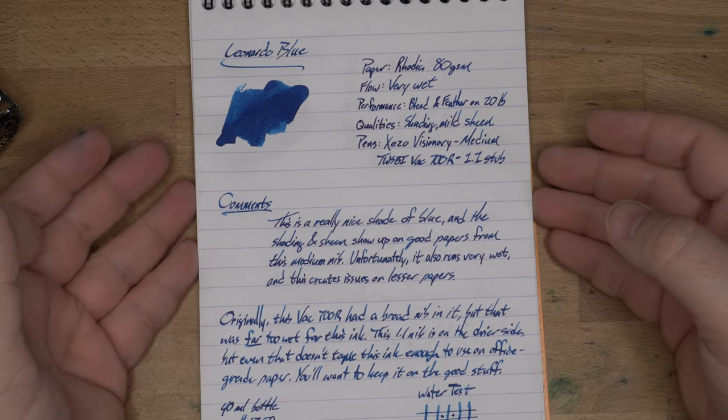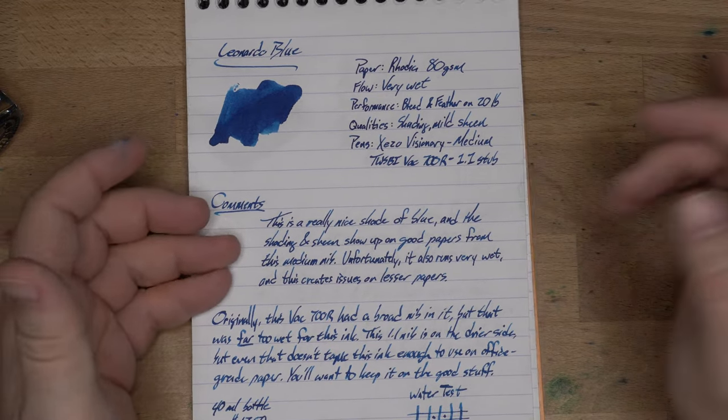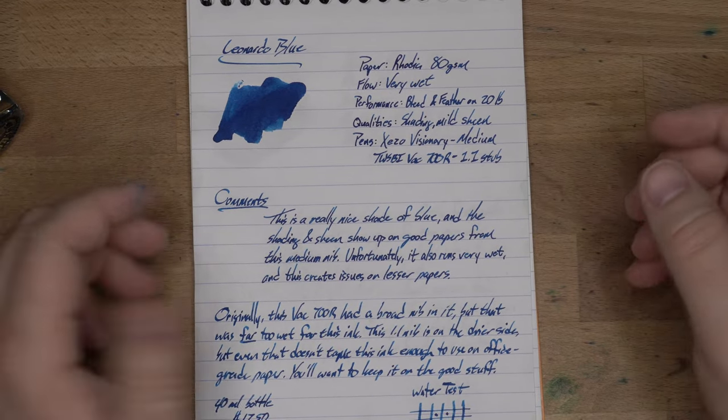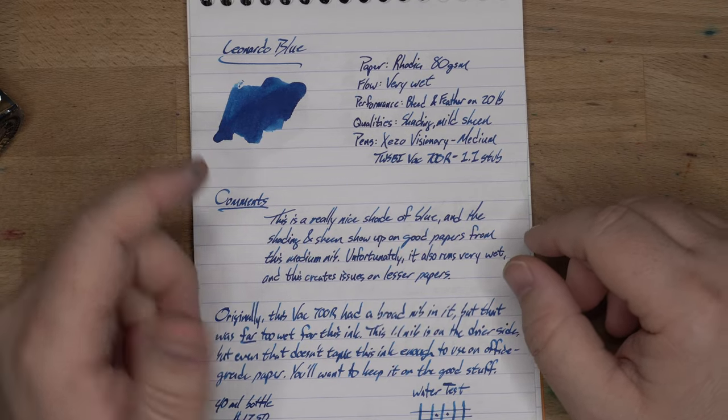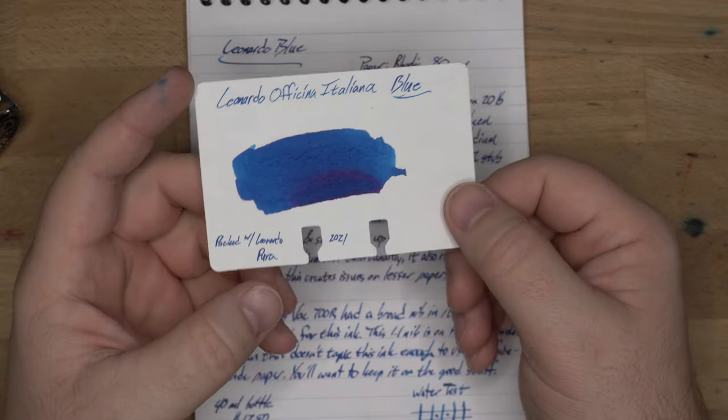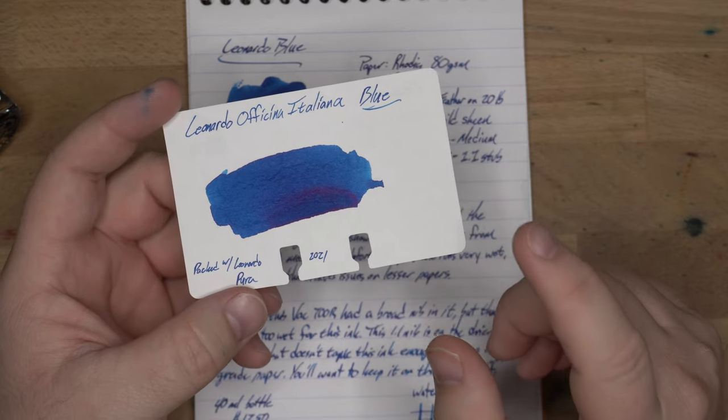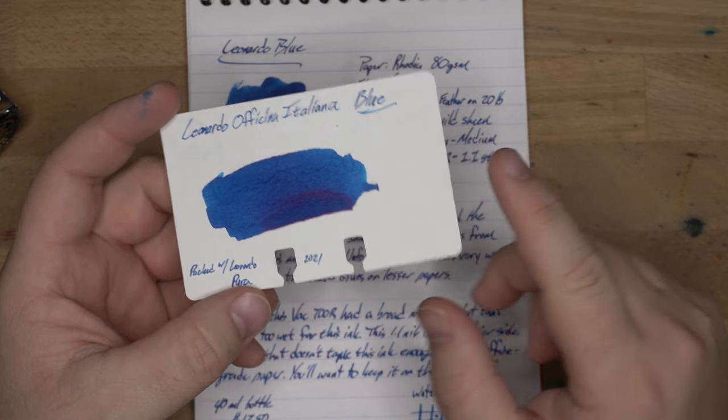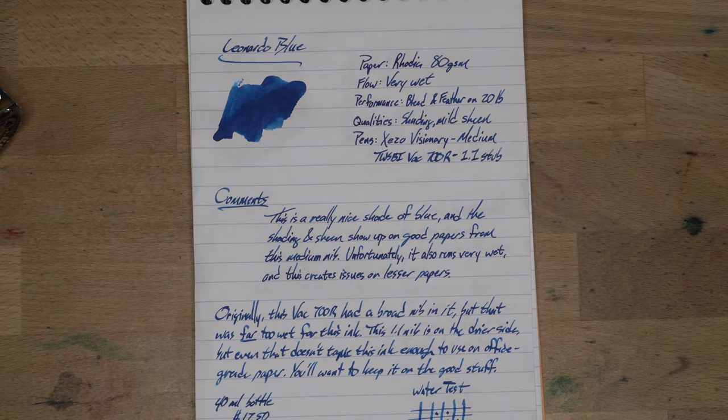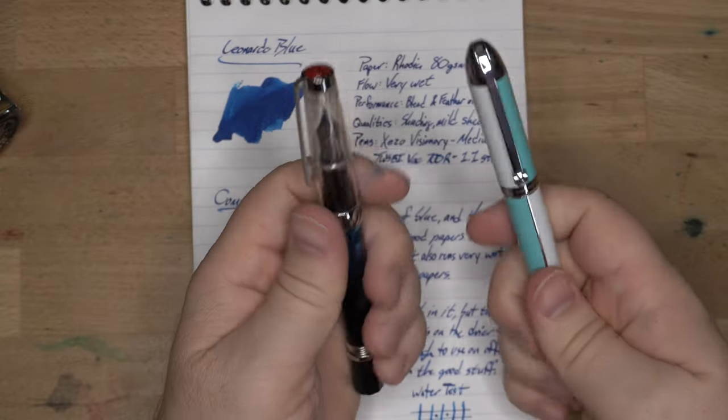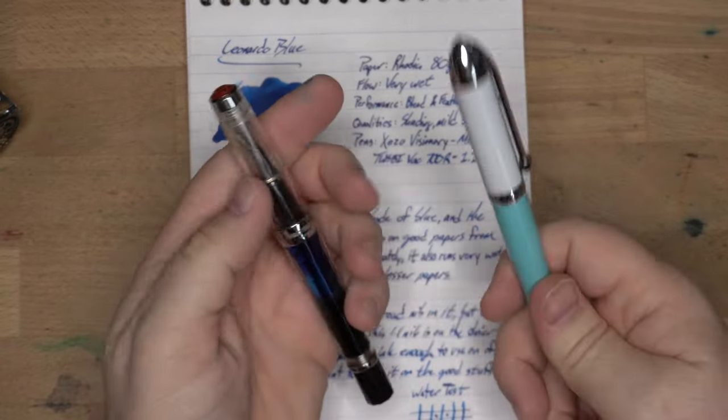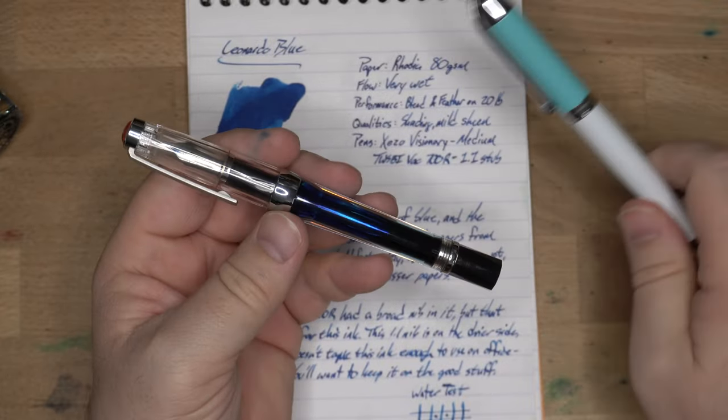How is this as an ink? I think it's actually really nice. It's a really nice sort of medium shade of blue. It has some lighter tones in there. It's actually got some sheen if you put down enough of it, and it's easy to put down enough of it. I've had this in two pens for quite a while since like August or something, according to my notes, although I've refilled this one at least once, maybe more.